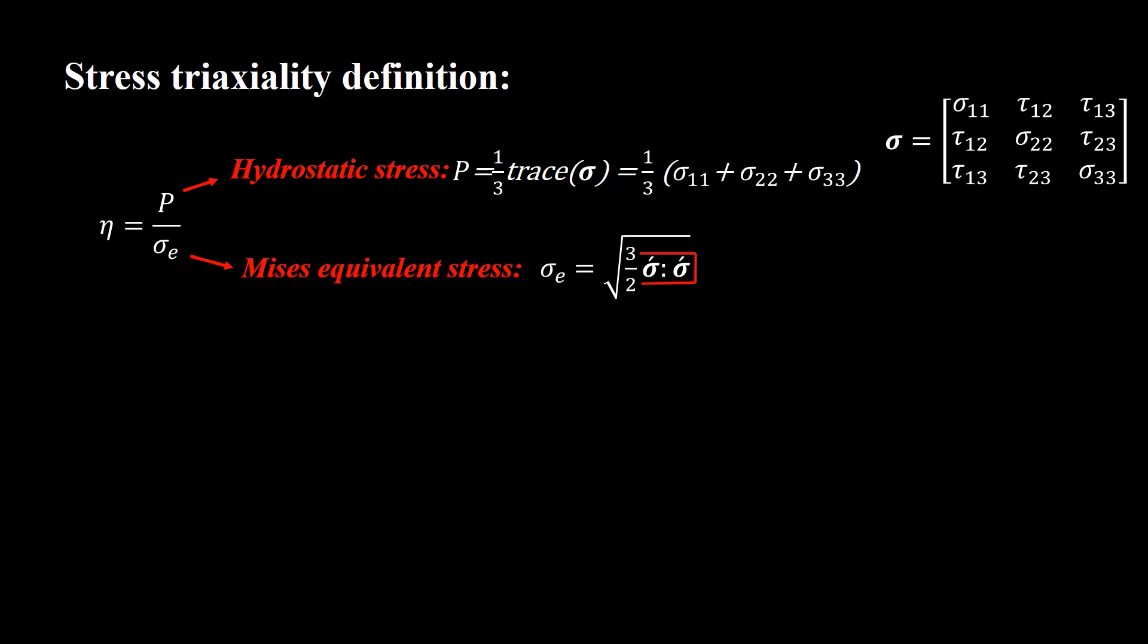Sigma e is the effective Mises stress. We can use this formula to calculate it using deviatoric stress tensor. This product on two tensors is called double contracted product and means that multiply two tensors component by component and sum the terms. In other words, this product contains summation of nine terms. The deviatoric stress tensor can be calculated as follows.